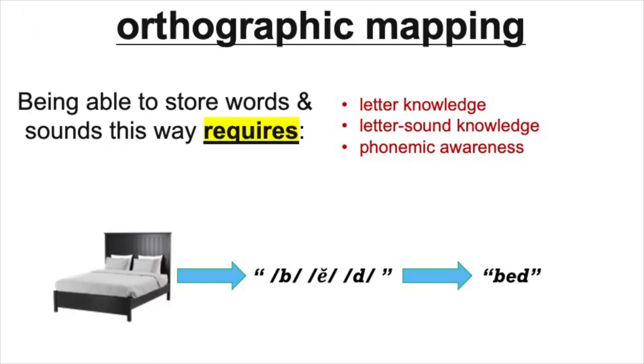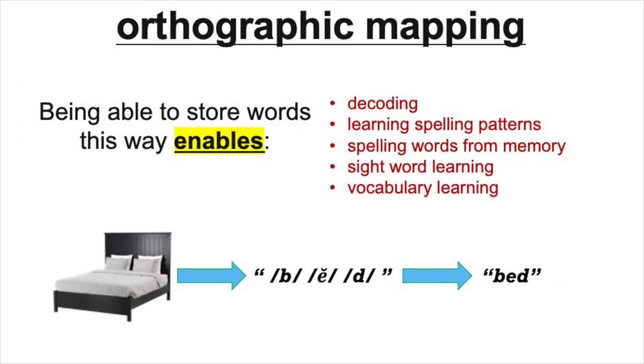As you saw in our example decoding the word bed, orthographic mapping, or storing and remembering connections between words, letters, and sounds, requires phonemic awareness and letter-sound knowledge. These are very early and very essential phonological awareness skills. You already know that orthographic mapping is what enables students to decode print, but it also enables learning spelling rules and patterns, spelling words from memory, and developing sight word and vocabulary knowledge.